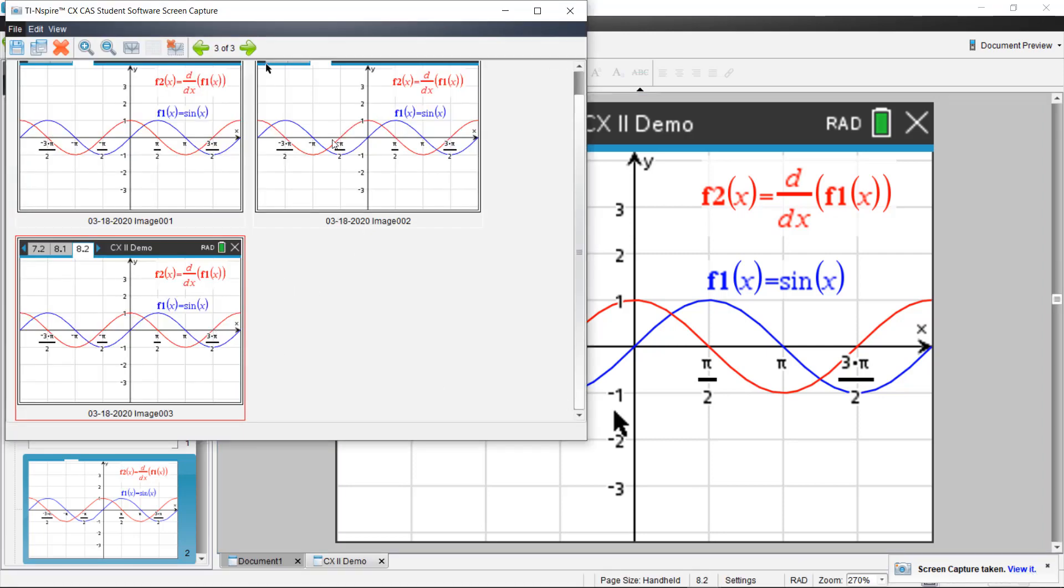You can see the difference from the one where I selected the camera icon up there. You can see my mouse, and this one doesn't have the mouse.